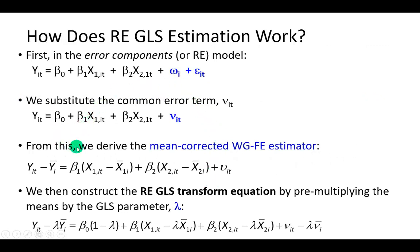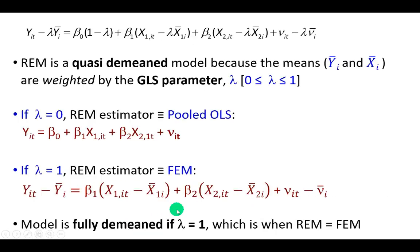Down to this mean corrected within group fixed effects estimator that we worked with previously, we construct the random effects GLS transform equation by multiplying the means in this model by the GLS parameter lambda. In this form, the random effects model would be said to be a quasi-demeaned model, and that's because the means are weighted by the GLS parameter lambda, which ranges from zero to one.